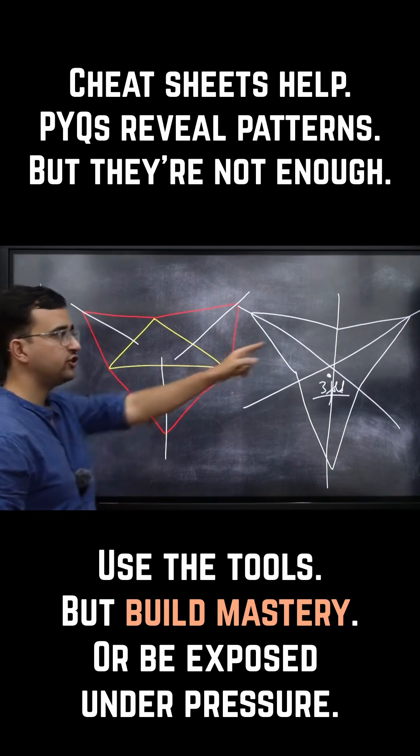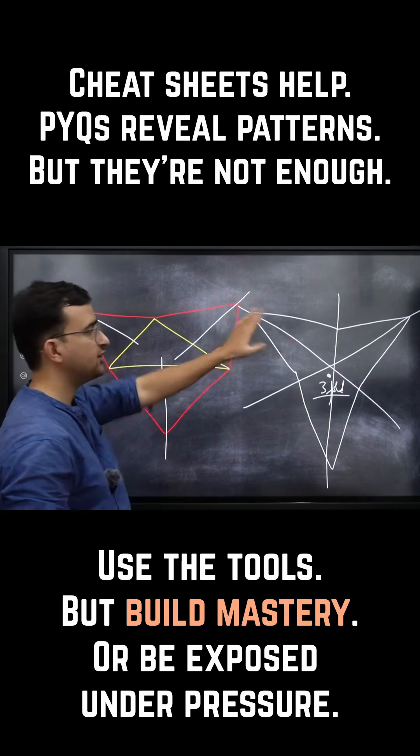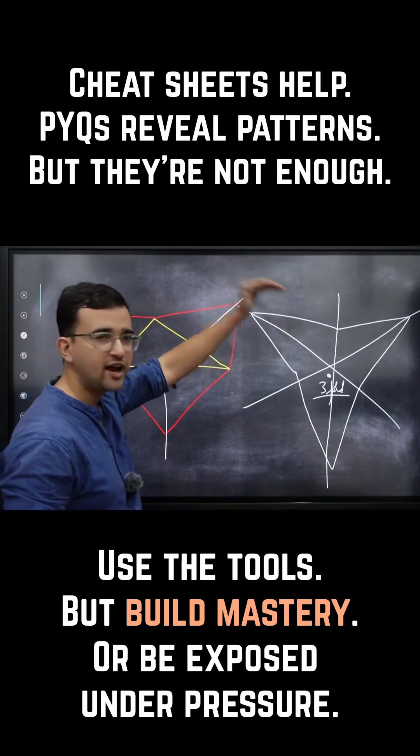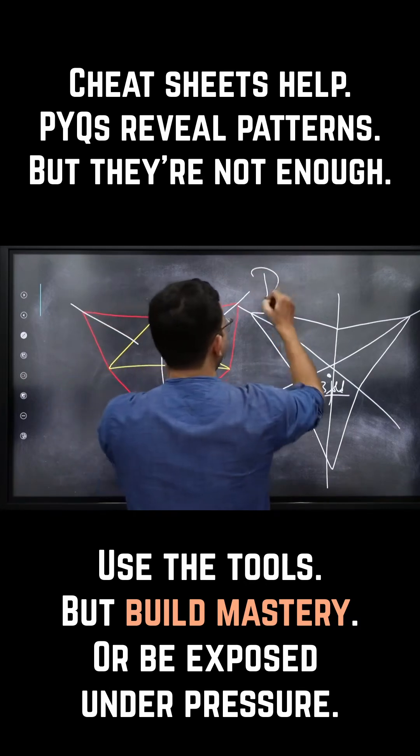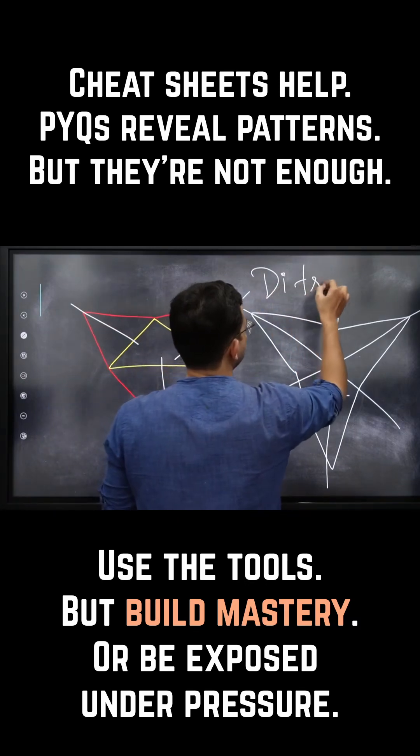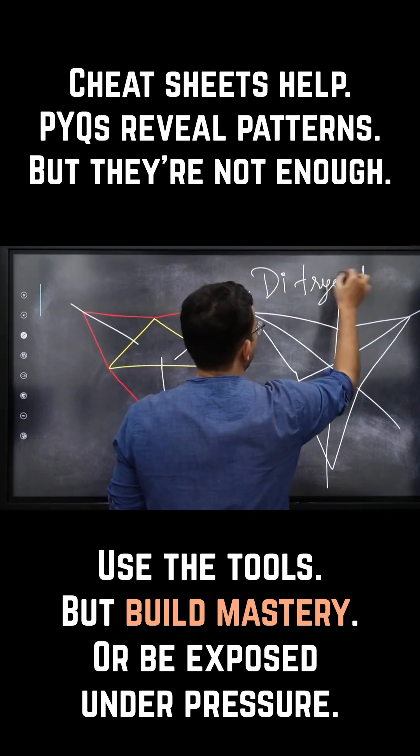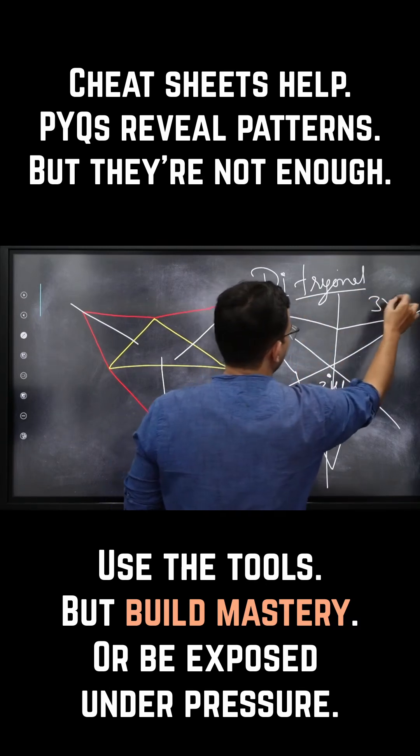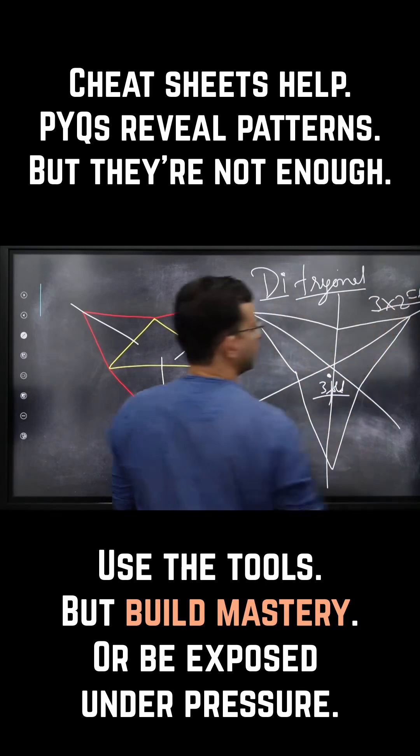Okay. So this shape that you see, this is known as a ditrigonal shape. So, trigonal meant three. Di means three into two, that means six.